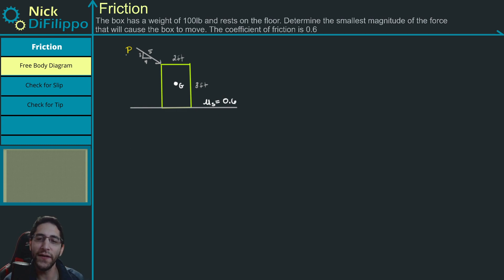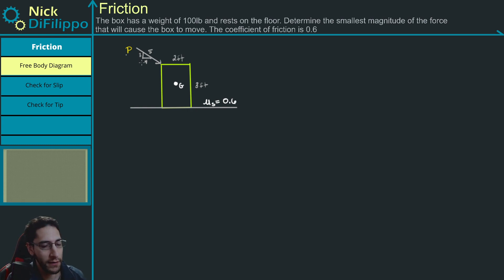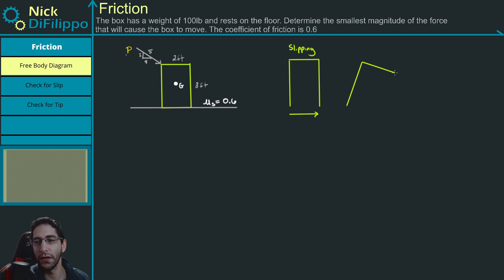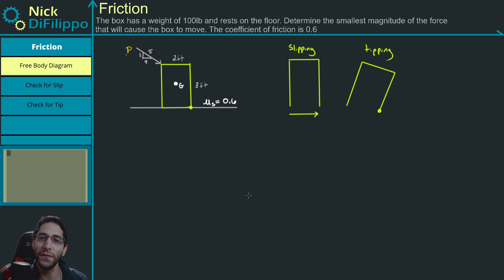Friction problems are the hardest problems to do because you need to look at the problem setup and visualize what could possibly happen if we apply a force here. If we apply a force on this box, there are two things that could happen. The first is that the box is going to slip — slipping occurs and the box moves in this direction. The second thing is tipping could occur, where the box tips over about that corner point.